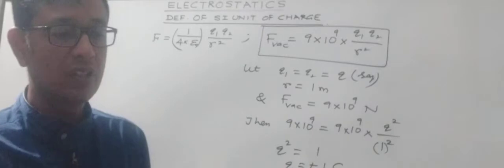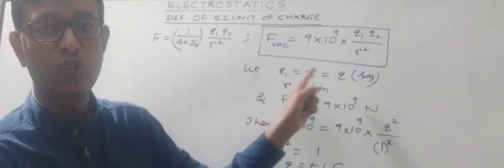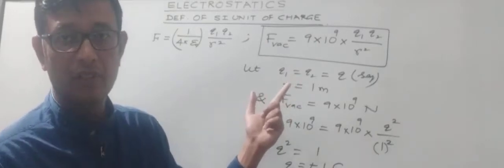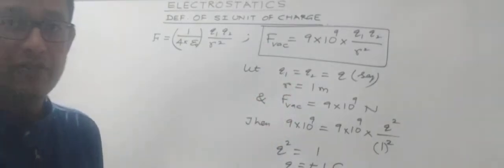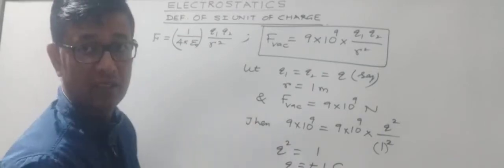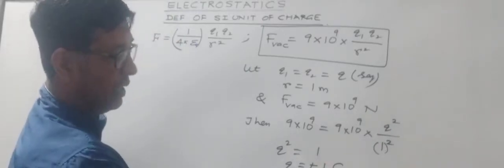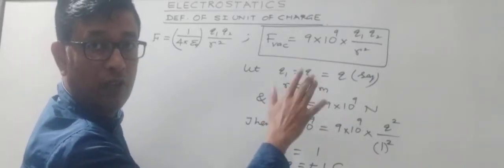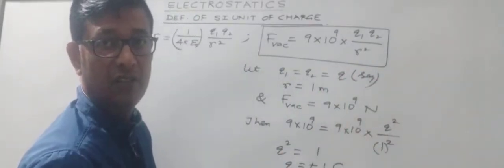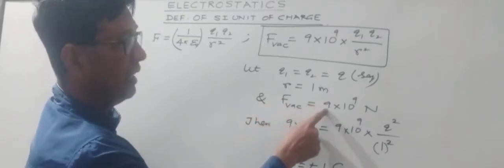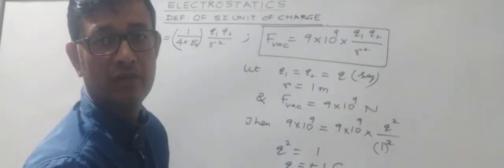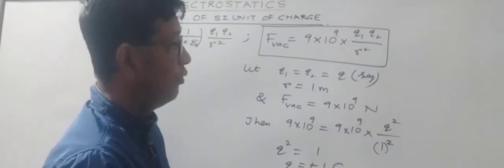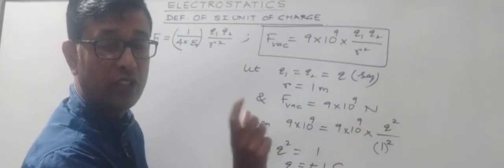Before we discuss the definition, one thing to be noted is that if you are considering similar and like charges, the nature of the force would be repulsive. The actual SI definition: 1 Coulomb may be defined as that charge which, when placed at a distance of 1 meter in air or vacuum from another equal and similar charge, experiences a repulsive force of 9 into 10 to the power 9 Newton. We considered equal and similar charges, so the force is repulsive.